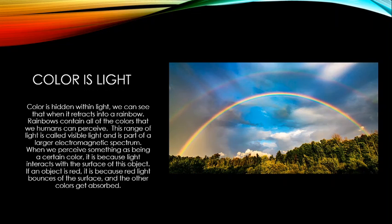When we perceive something as a certain color, it's because light interacts with the surface of that object. If something looks red, red light bounces off the surface while other colors get absorbed. Everything has a certain pigment, and those pigments interact with light — absorbing most wavelengths and reflecting back specific ones, which is the color we see.